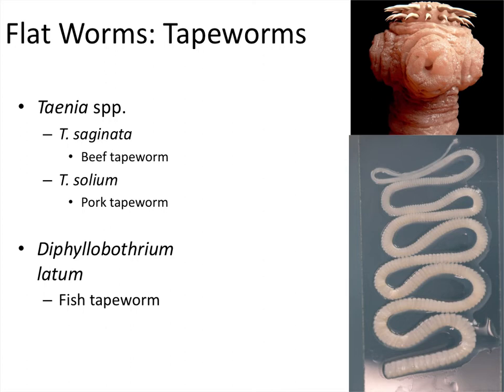Occasionally these tapeworms can migrate outside the intestine — there are people who have gotten them in the brain or liver — but that is very rare. Most of the time, tapeworms stay isolated to the intestinal area. Our third tapeworm is Diphyllobothrium latum, the fish tapeworm. Again transmitted through the fecal-oral route, or more commonly with this one, when people working with raw fish get it on their hands and don't wash well enough, ingesting the tapeworm that way.